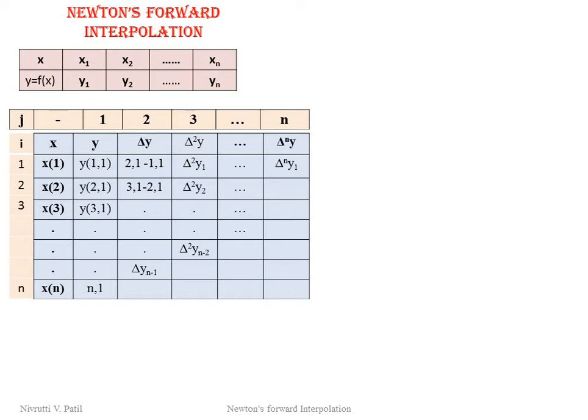We require this table to prepare the flowchart and write the MATLAB program, which is why I am explaining it in detail. Now let's draw the flowchart. We start with the start symbol, then we write the given data: n is given and the value of xg is given. These values are taken as input from the user using the input parallelogram symbol. Then we take the input of all x values and y values, starting from 1 to n.